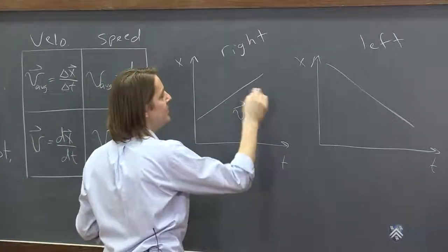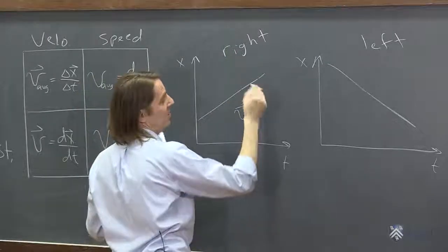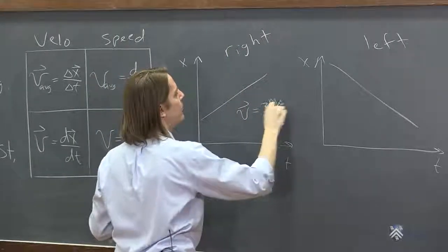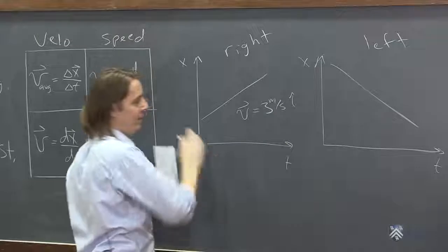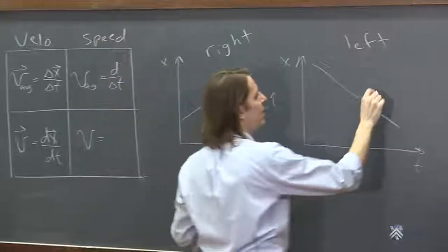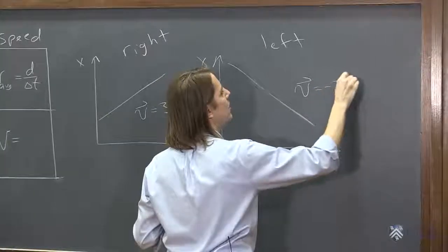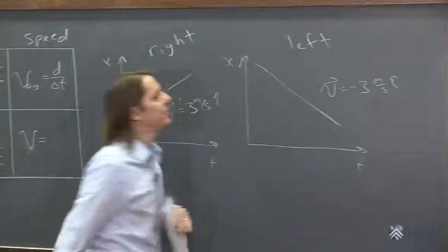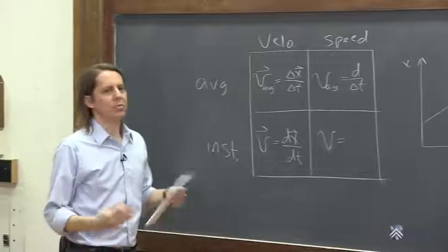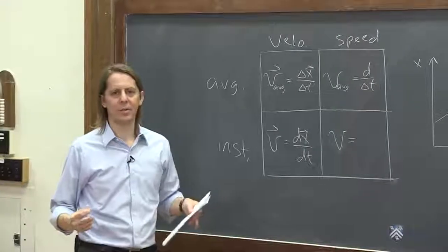So the difference in v would be the sign, right? So here v would be, say, let's just estimate that it was 3 meters per second, I'll put i hat, positive direction. And here, let's say the instantaneous velocity would be minus 3 meters per second i hat.